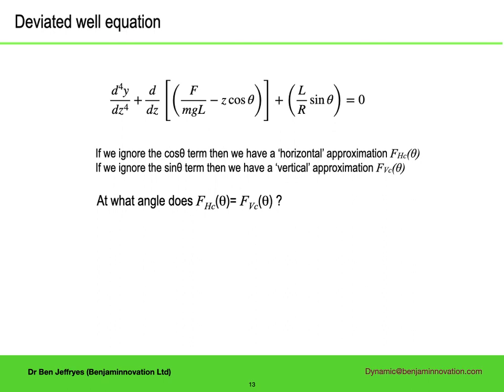We can write down the equation to solve for a hole at constant angle. If we ignore the cos theta term, then it is a horizontal approximation. Ignoring the sin theta term, it is a vertical approximation, and we can calculate the critical load for both approximations. An indication of when the real solution is more like the horizontal one than the vertical one would be when the horizontal approximation load equals the vertical approximation load. For 6-inch collars in a 12-inch hole, the ratio L over R is over 200, corresponding to a deviation of 0.4 degrees, so practically vertical. This is all very hand-waving, some real calculations are needed.